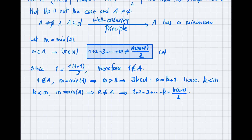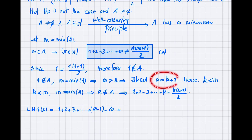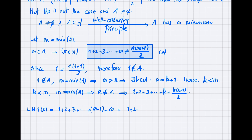Now I want to start from the left-hand side of the starred relation. The left-hand side of the star is the sum of numbers from 1 up to m. If I do it step by step, I reach step m − 1 and then m. But I know that m = k + 1, so instead of m I put k + 1, giving 1 + 2 + 3 + ⋯ + k + (k+1). I know that 1 + ⋯ + k equals k(k+1)/2.